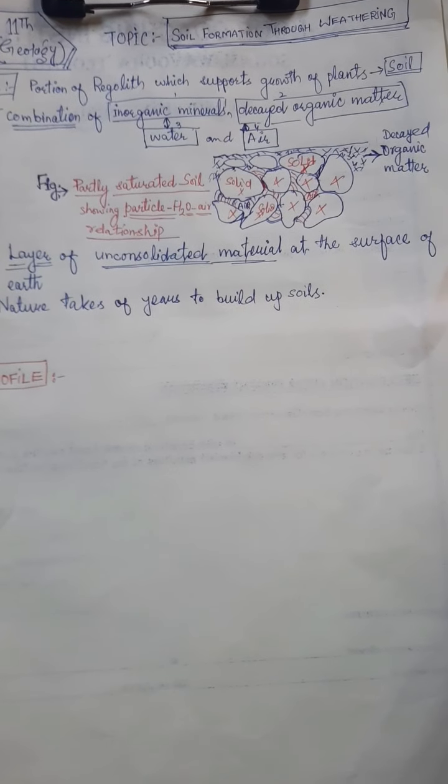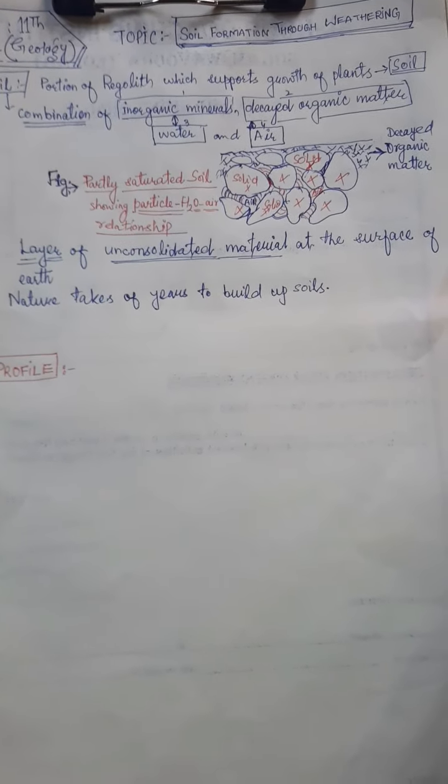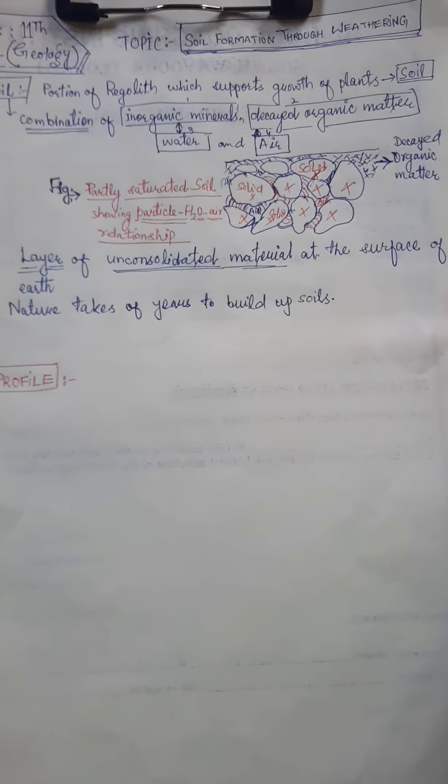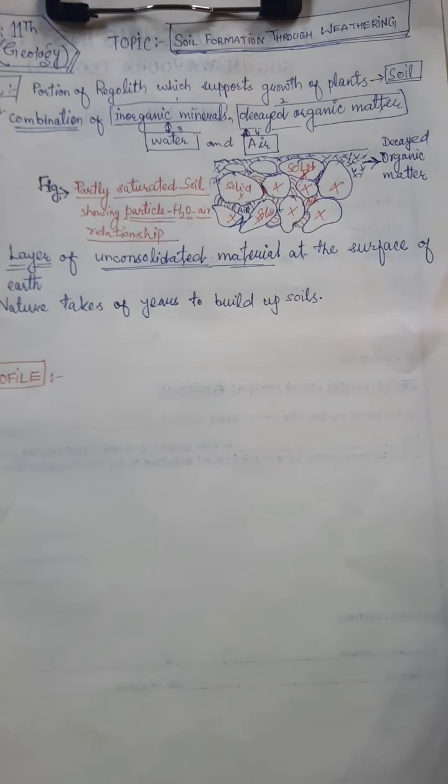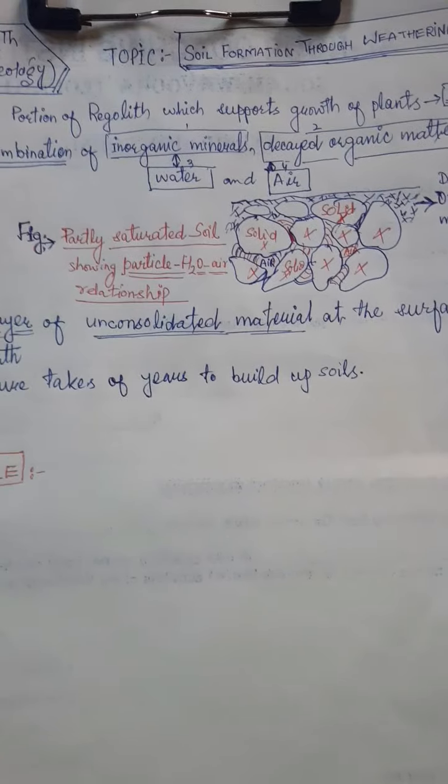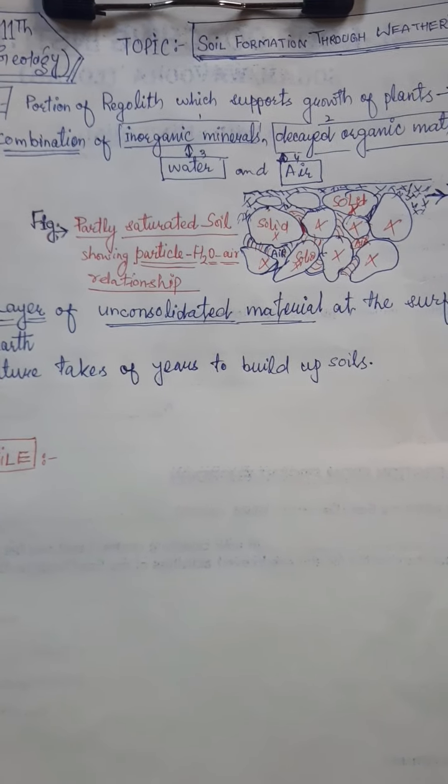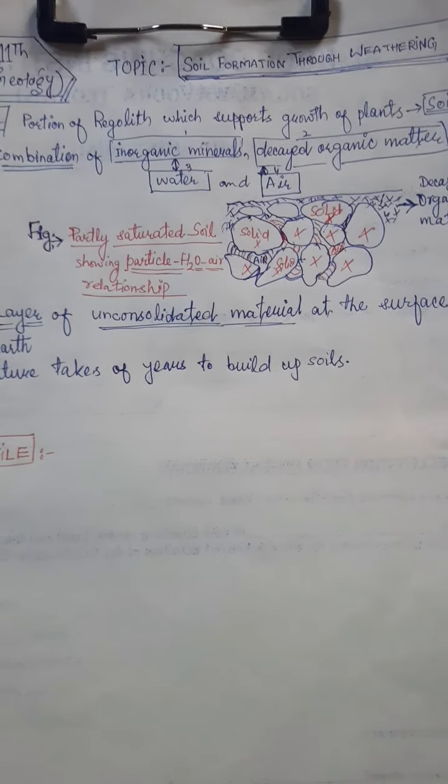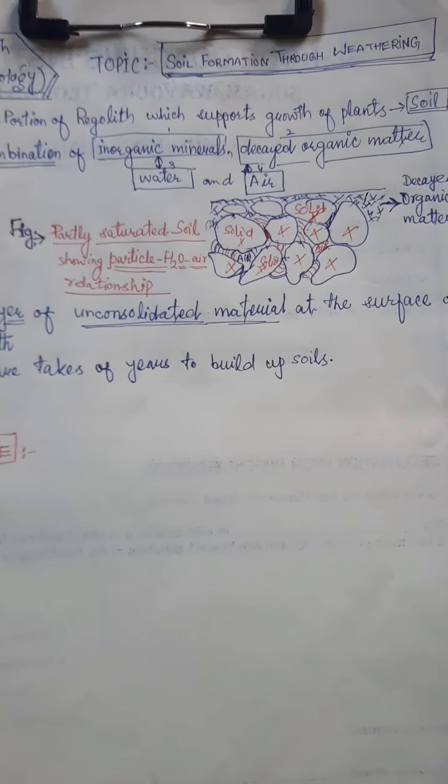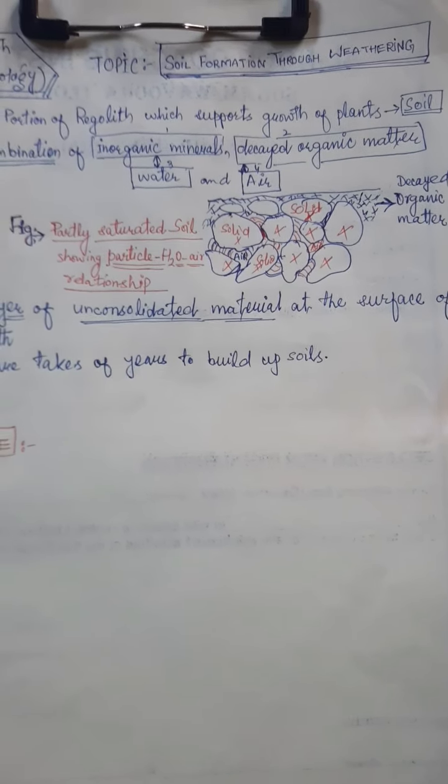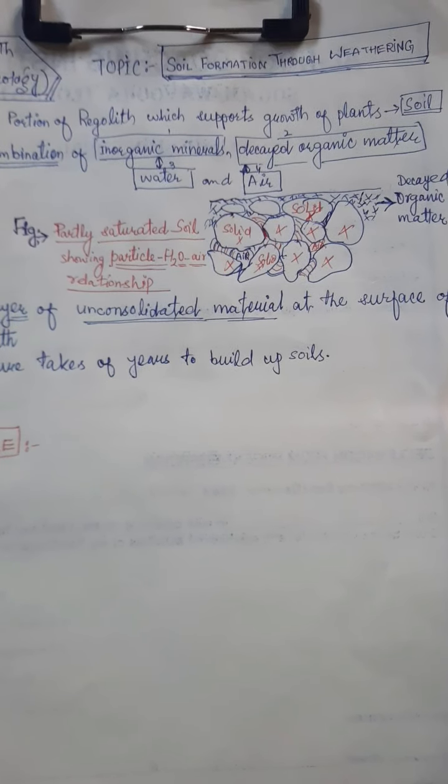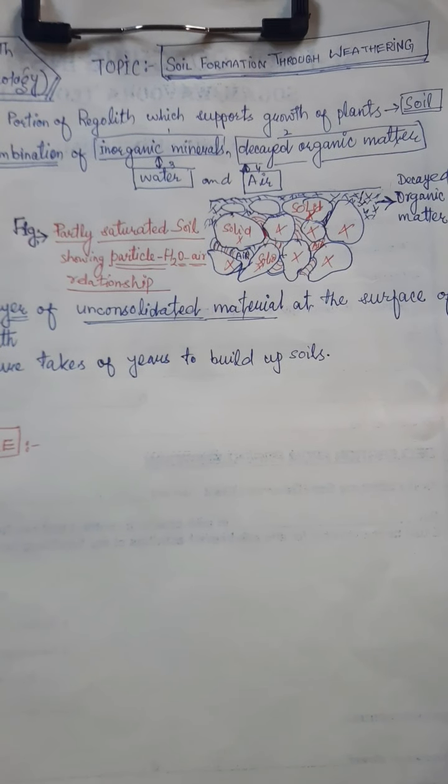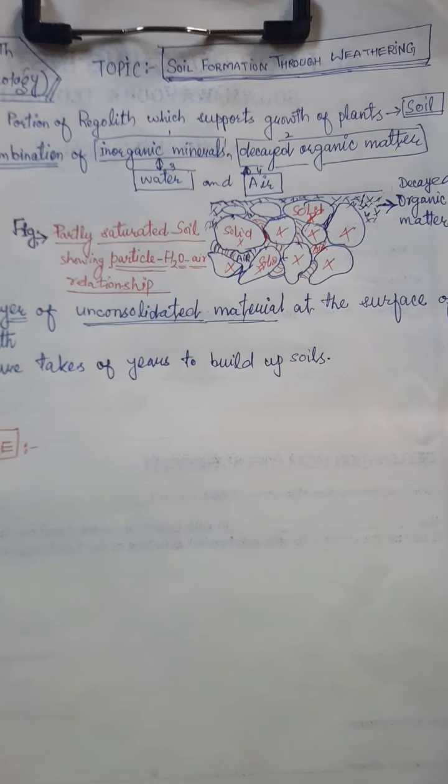We learned that soil is actually part of regolith and it is present at the topmost portions of the regolith. That means the topmost layer or portion of regolith that supports the growth of plants is known as soil. Soil's key definition is simply part of regolith which supports growth of plants.